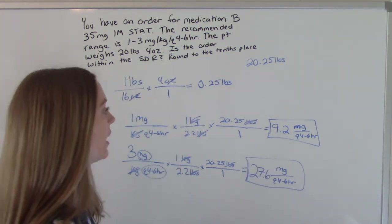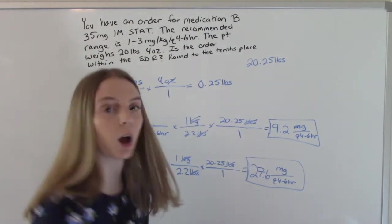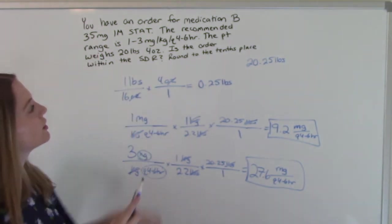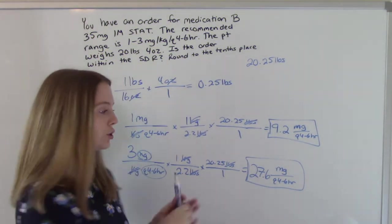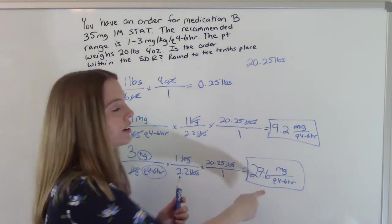So this is our range. 9.2 to 27.6. And what is our order for? 35. So is the order within the safe dose range? No. It's too high. It's beyond our maximum. So we need to call the doctor and get this changed.